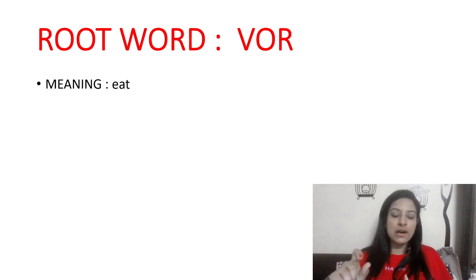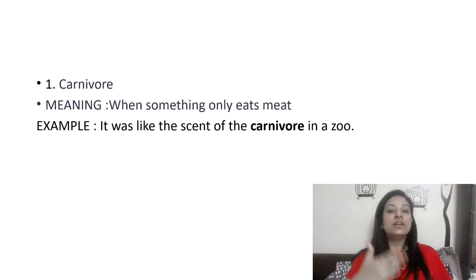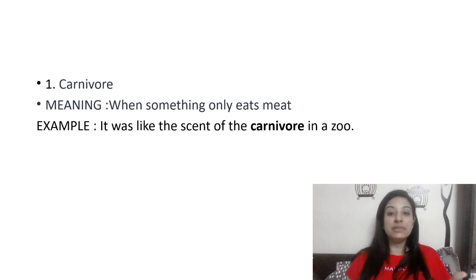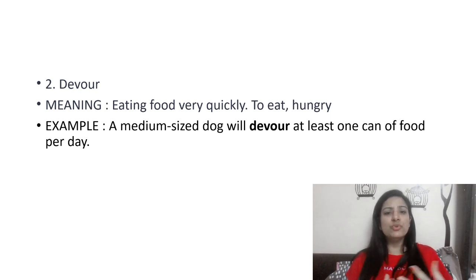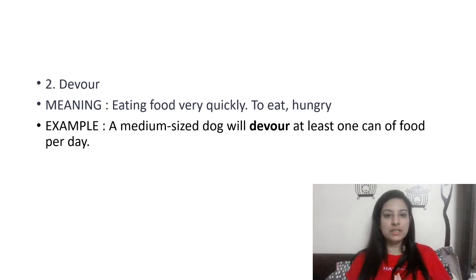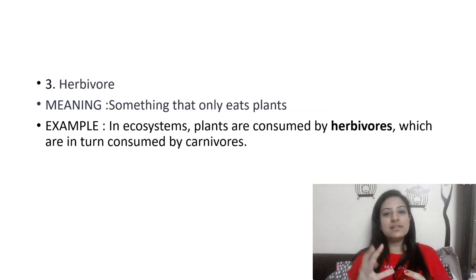Today's root word is VOR or VOUR, and both mean 'eat.' So carnivore — an animal that eats other animals, eating flesh and meat. For example: The scent of the carnivore in a zoo. When an animal only eats meat or flesh, that animal is a carnivore. Then 'devour' means to eat food very quickly when you are very hungry.